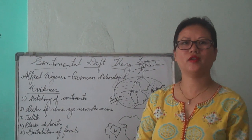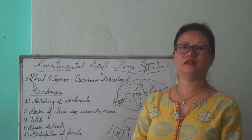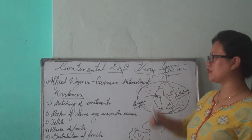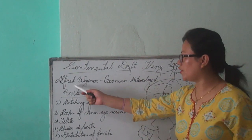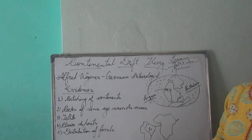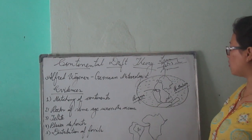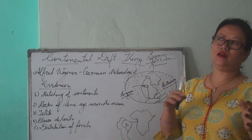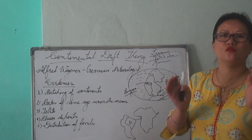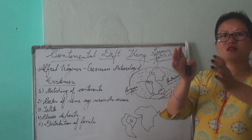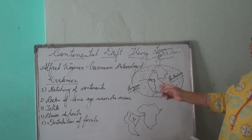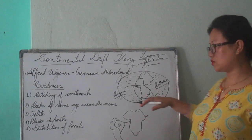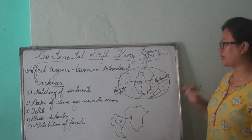Hello everyone, today we are going to discuss Continental Drift Theory, which was given by Alfred Wegener. He was a German meteorologist. According to him, after the earth's formation, it was only one — all the land masses were together, and he gave this the name Pangaea. All the water parts were also together, which was named Panthalassa.